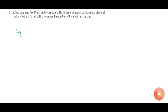Let us go through the question. A bag has 5 red balls and some blue balls. Let us take the number of blue balls as x, so we have x blue balls. The total number of balls in the bag is equal to 5 plus x. A condition is given: if the probability of drawing a blue ball is double that of a red ball, we need to determine the number of blue balls.